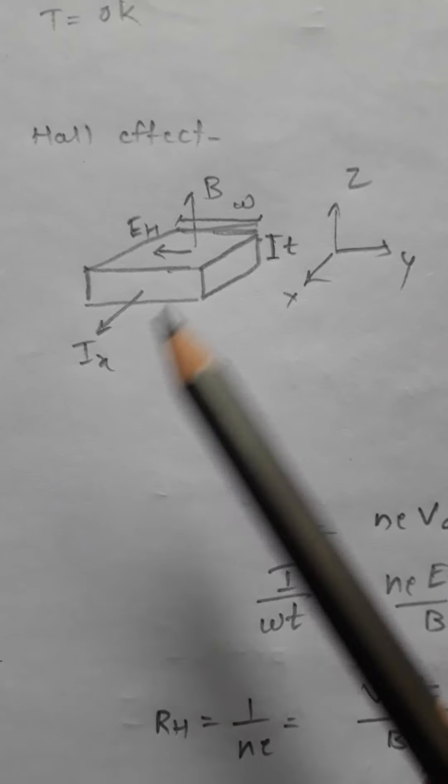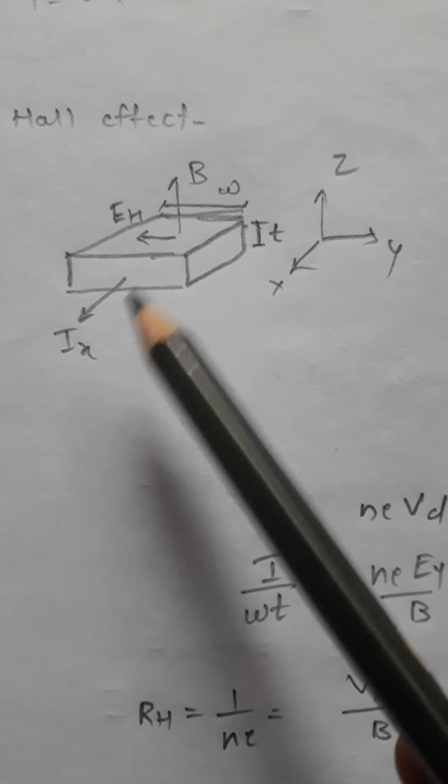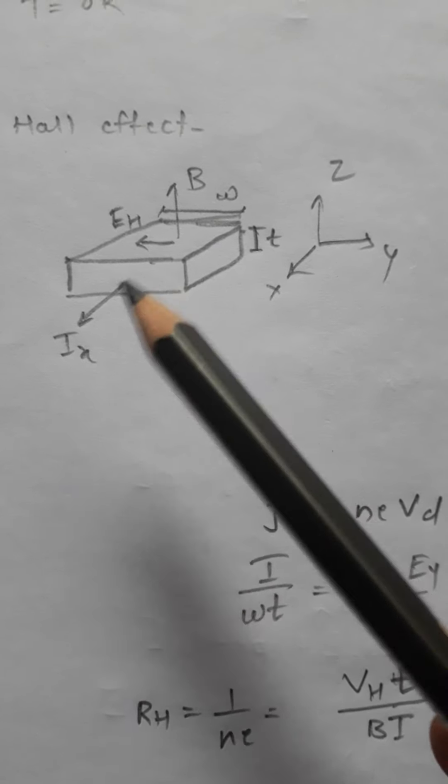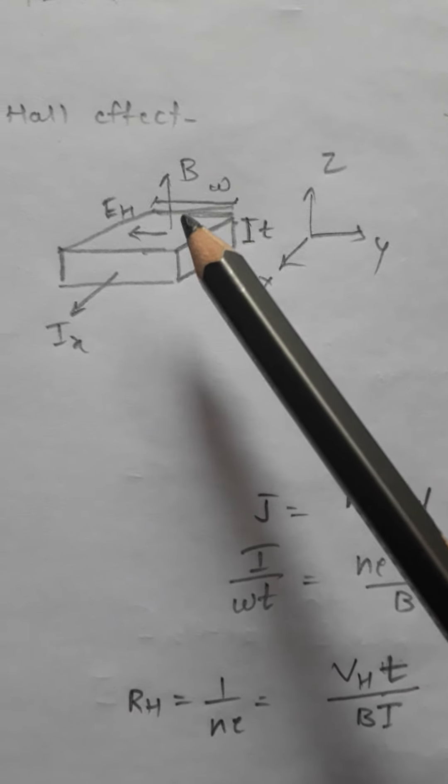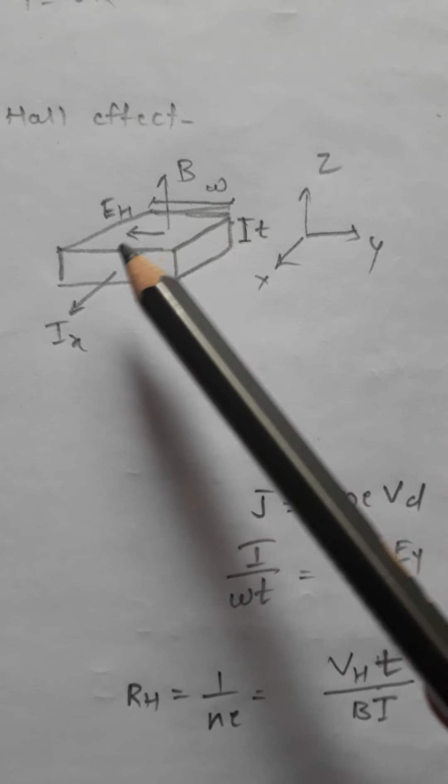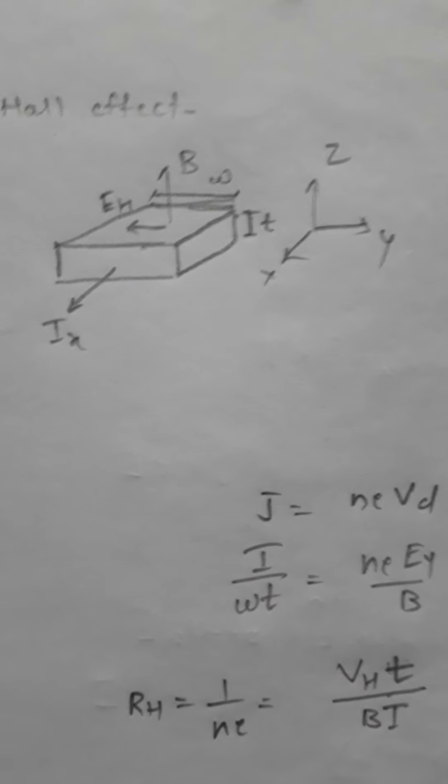Let's look at the Hall effect. We have a current-carrying conductor, let's say an n-type semiconductor or metal where electrons are the majority carriers. The current is flowing along this axis. When we apply a magnetic field, an electric field gets established in the conductor, which is known as the Hall effect.